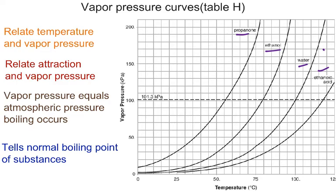In vapor pressure curves, you can relate temperature and vapor pressure. Now, we must be careful on the horizontal axis each box represents a unit of 5 degrees. But on the vertical axis, each box represents a value of 10 kilopascals.